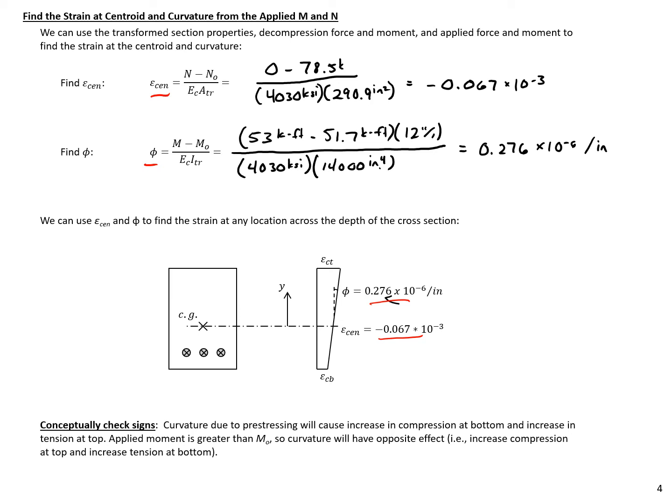We can do a conceptual check on the sign of the curvature. The prestressing itself increases compression in the bottom and tension at the top. Since the applied moment of 53 kip-feet is greater than the prestressing moment of 51.7 kip-feet, we expect an increase in compression at the top and tension at the bottom. The positive curvature we calculated is consistent with this — it increases compression at the top and adds tension at the bottom.